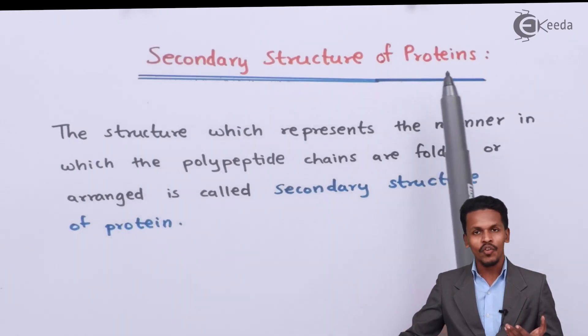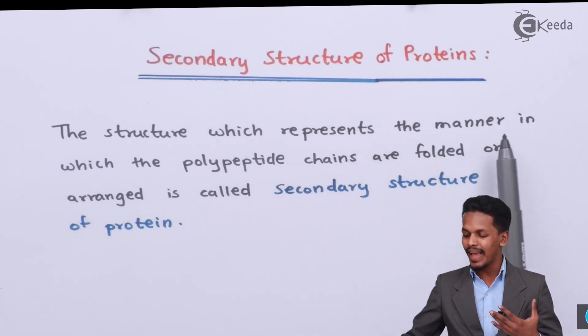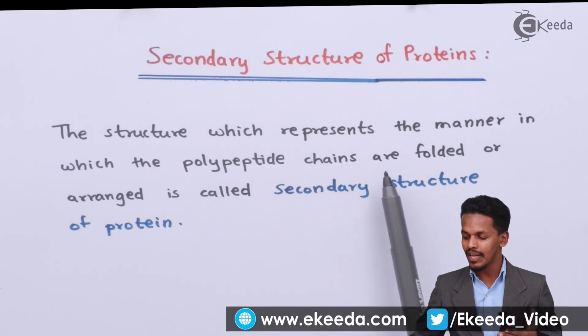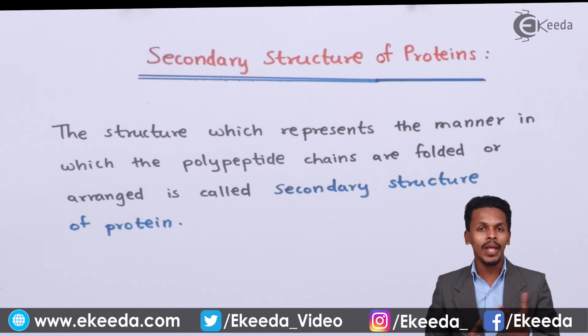Talking about the secondary structure of protein, let us understand the definition. The structure which represents the manner in which the polypeptide chains are folded or arranged is called secondary structure of protein. Based on that they are divided into two types: alpha helix structure and beta pleated structure.